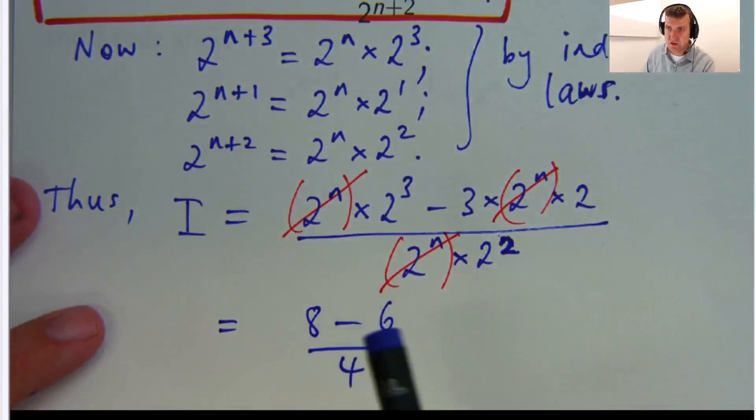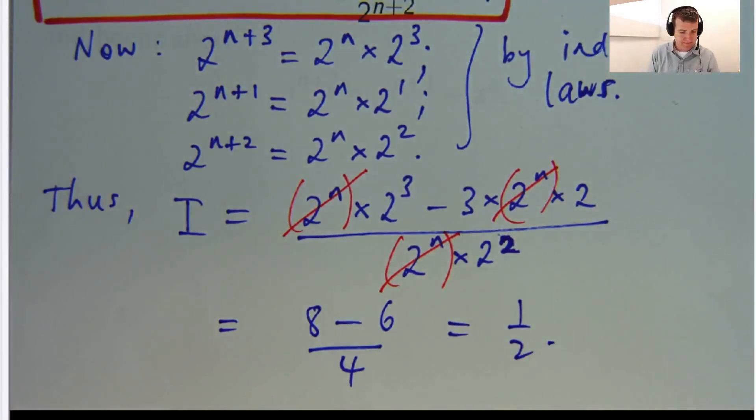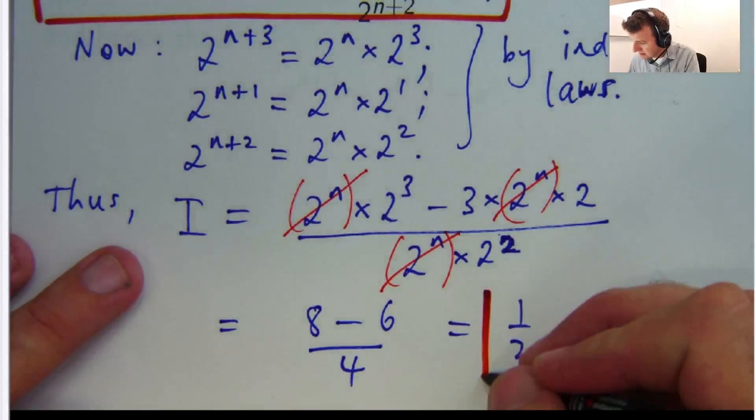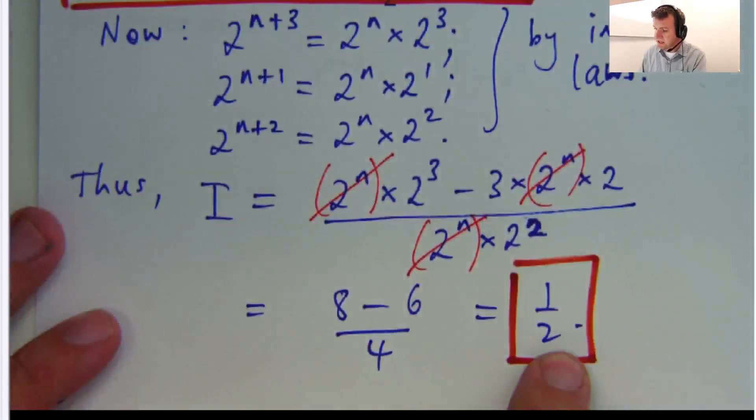Okay, so the top gives you 2. 2 divided by 4 equals 1 half. Okay, so our answer, what is this value? It is just 1 half.